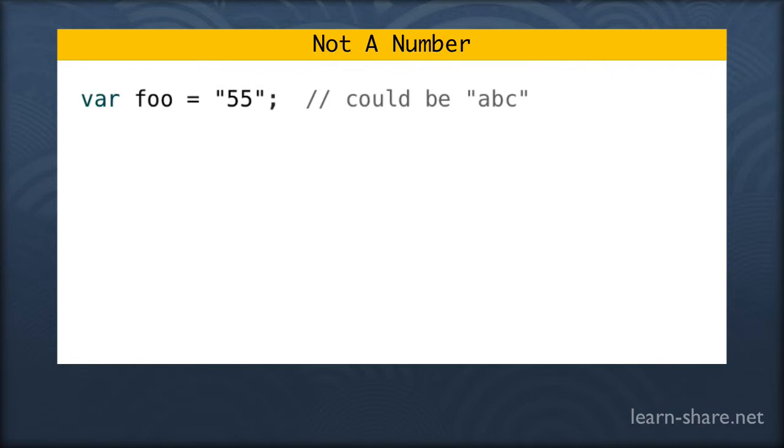What we can do first is we can create a new variable called myNumber, and then we're going to try to convert whatever is in foo into a number. This sometimes will work, sometimes won't. If it's a value like 55, it would work. If it's an exclamation mark, it wouldn't.